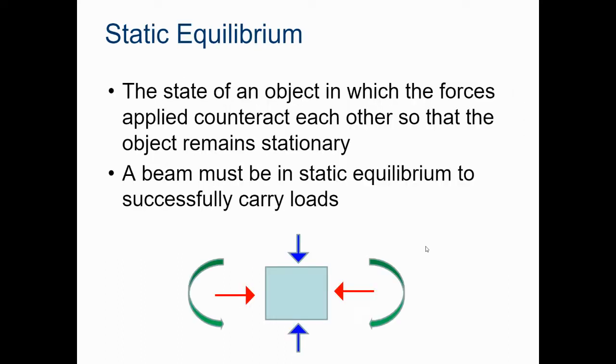So beams have to be in what's called static equilibrium, and that is the state of an object in which the forces that are applied to it counteract each other so that the object remains stationary. So if you have forces pushing down on a beam, like this box that's in this graphic here, there's also going to need to be forces, equal forces, pushing up on the beam. Same thing with side-to-side movement from left to right, and also twisting motion, like we see with these green arrows.